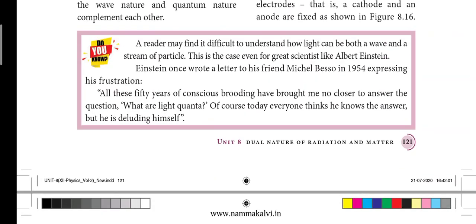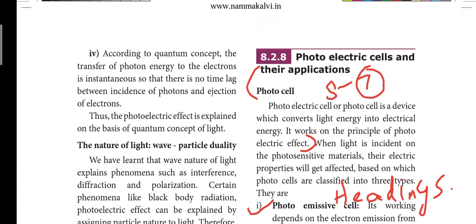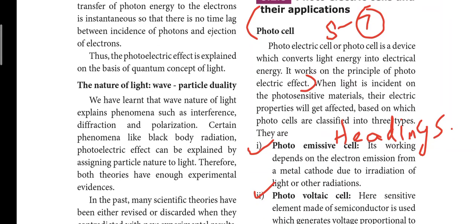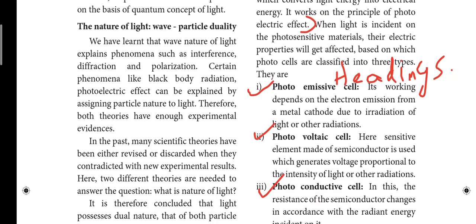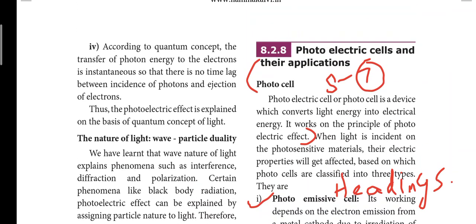Next page number 121, photo cell, the definition, first four lines, that is the 7th short answer. Types of photo cells: photo emissive cell, photovoltaic cell, photo conductive cell, and the heading material. This is 7th short answer.